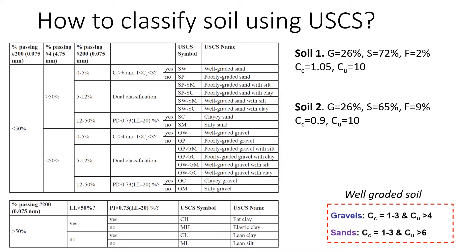This video will explain how to classify soil using a Unified Soil Classification System. The system has two parts: the top chart is for coarse-grained soil and the bottom is for fine-grained soil. The boundary between coarse-grained and fine-grained soil is 50 percent — if more than 50 percent is coarse-grained we use the top chart, and if more than 50 percent is fine particles we use the bottom part.